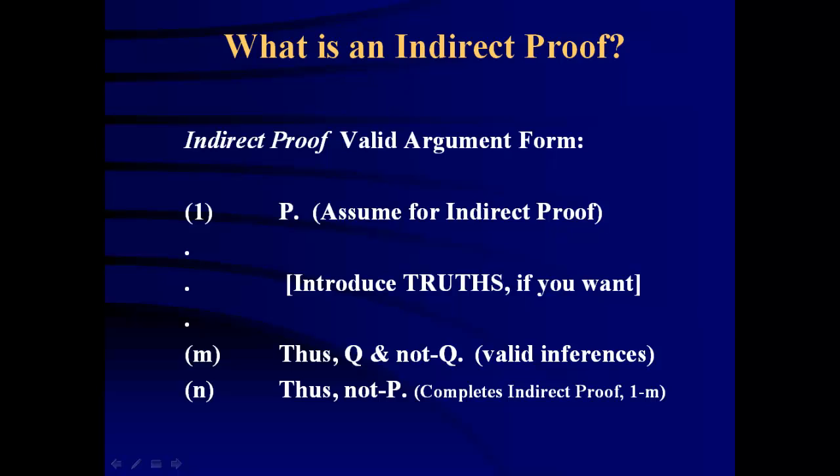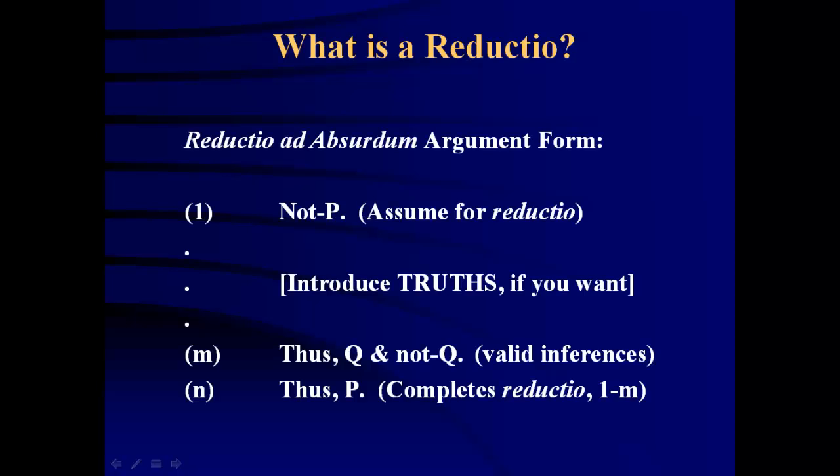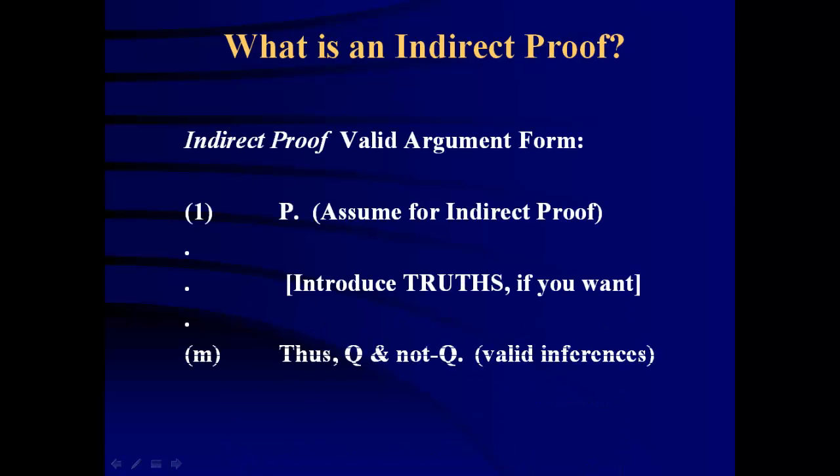Now it turns out that of these two argument strategies, indirect proof is absolutely uncontroversial. Virtually no one disputes the validity of this inference form. Whereas Reductio, there is a group of logicians called intuitionist logicians who do not endorse Reductio as a valid inference form. But if you're in my course, I don't mind, you can use either one. Those who claim that the Reductio argument form is a valid argument form are called classical logicians, and those who deny it are called intuitionist logicians or intuitionists. But no one, even classical logicians and intuitionists alike, disputes this inference form. So this is the one to go to.